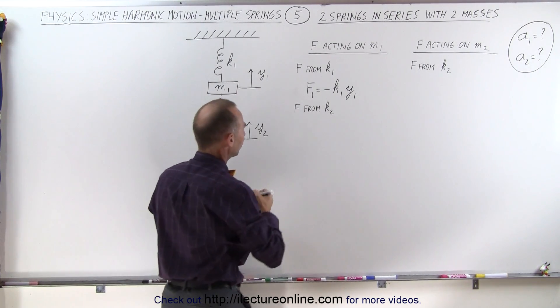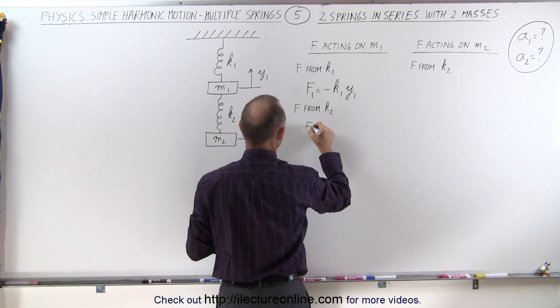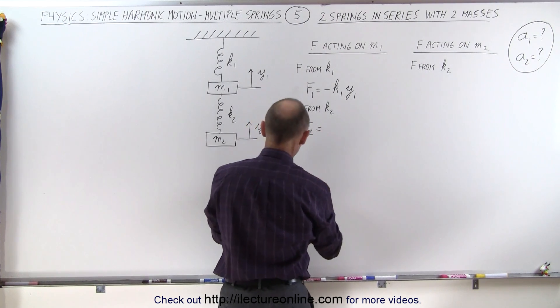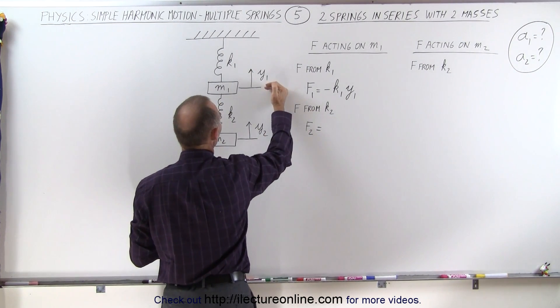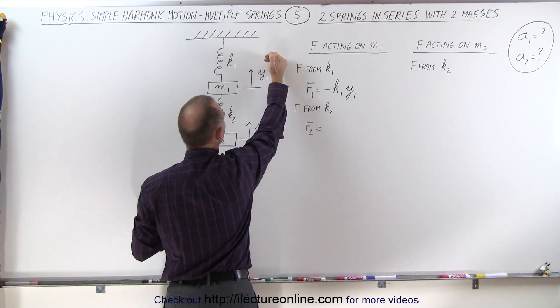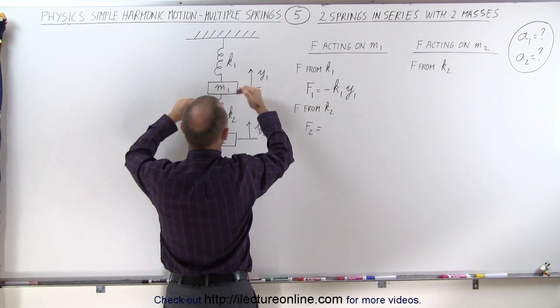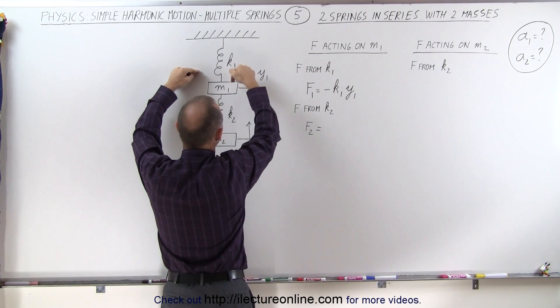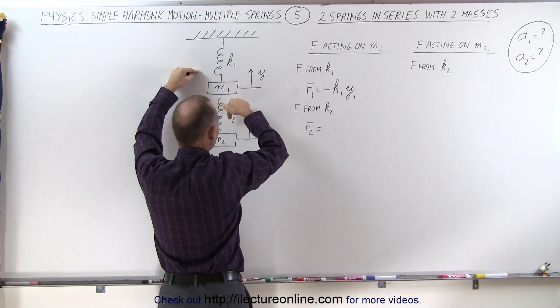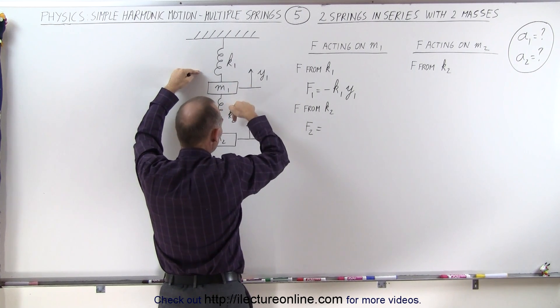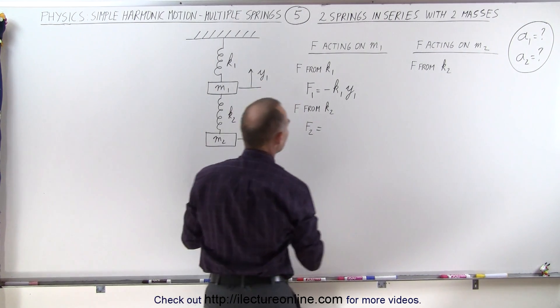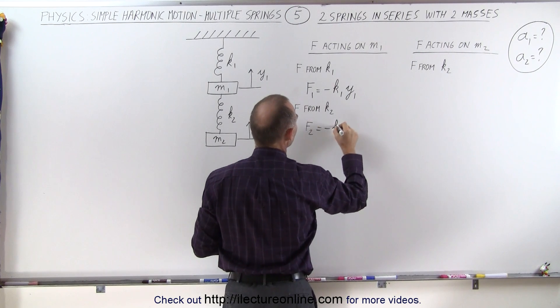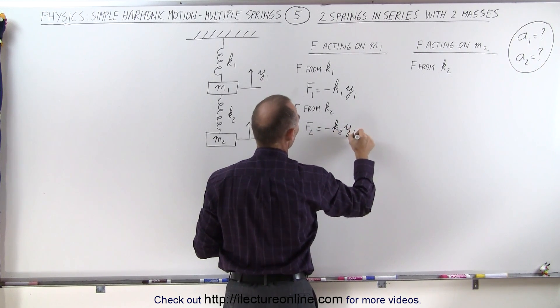What about the force caused by this spring right here from k2? Well let's call that f2. And notice that if y1 goes up, so if y1 is positive, it will elongate this spring, and this spring will pull downward. So it will be a negative force if this is a positive quantity.